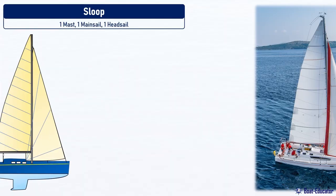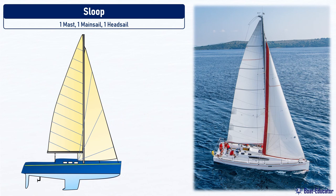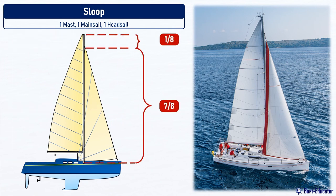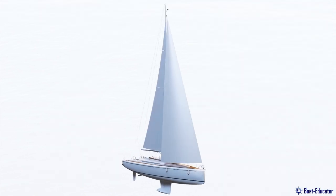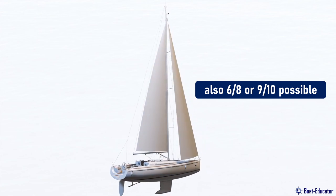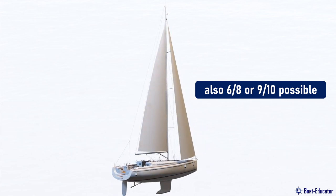Sloop. Modern sailing yachts are sloop-rigged. A sloop has a mast, a mainsail, and a headsail. A sloop has a so-called 7/8ths rig. The forestay, to which the headsail is attached, is at 7/8ths of the total height of the mast. The ratio can also be 6/8ths or 9/10ths on modern yachts, but the term 7/8ths has prevailed.